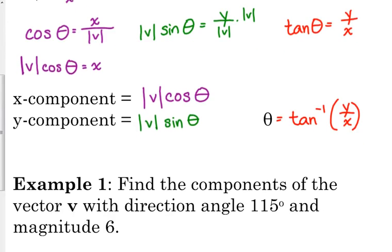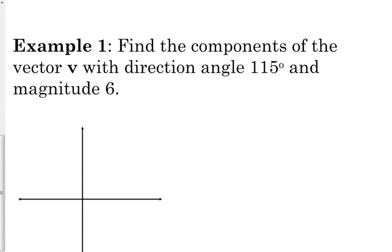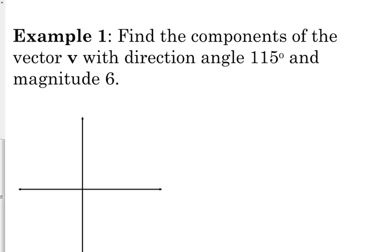So, the first example that we're going to do is we're going to find the components of a vector that has a direction angle of 115 and a magnitude of 6. The vector has a direction angle of 115 degrees and a magnitude of 6. So, the first thing that I'm going to do is I'm going to draw it just really quickly and briefly so that I have a visual so that I can kind of check my answer. So, 115 degrees is just a little bit more than 90 and a magnitude of 6.